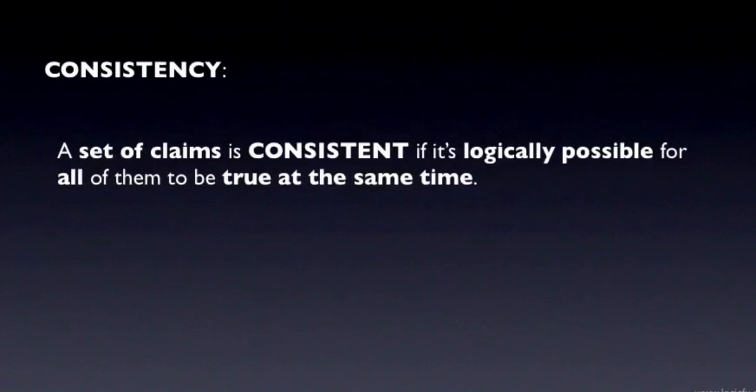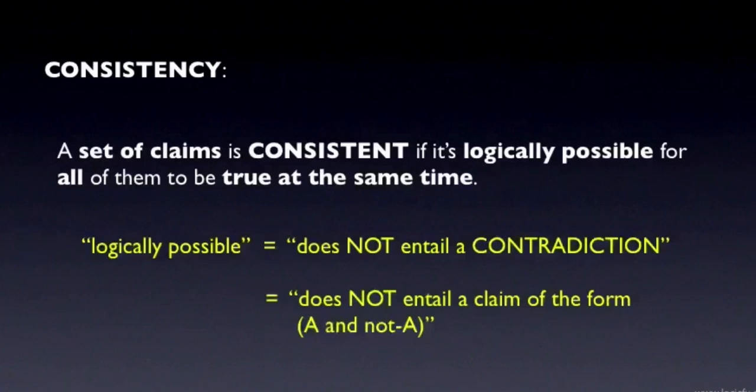What does logically possible mean here? Logically possible means that the set of claims doesn't entail a logical contradiction. A contradiction is a claim that is false in all logically possible worlds, and we usually write the general form of a contradiction as a claim of the form A and not-A. Not-A is usually interpreted as the contradictory of A, but as we saw in the last tutorial, this can also be the contrary of A.